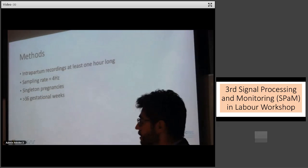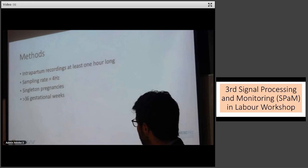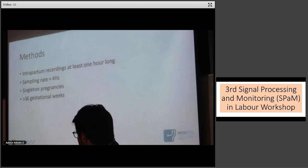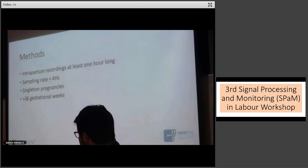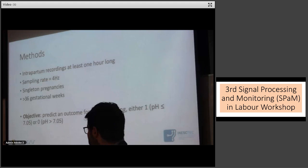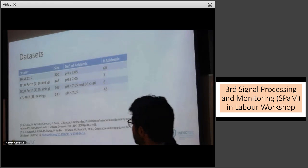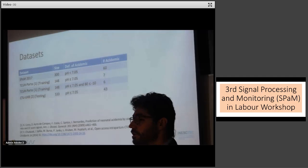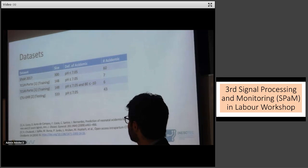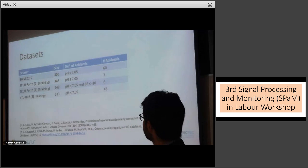The study focused on intrapartum tracings — no preterm, all tracings at 4 Hz, singleton pregnancies. The goal was to classify tracings as acidemic or non-acidemic. In 2017, the original SPAN dataset was used, which contained 60 acidemic cases. A dataset here served as a testing dataset for parameter tuning. One drawback was that there were only six or seven acidemic cases depending on whether base excess was included in the definition.